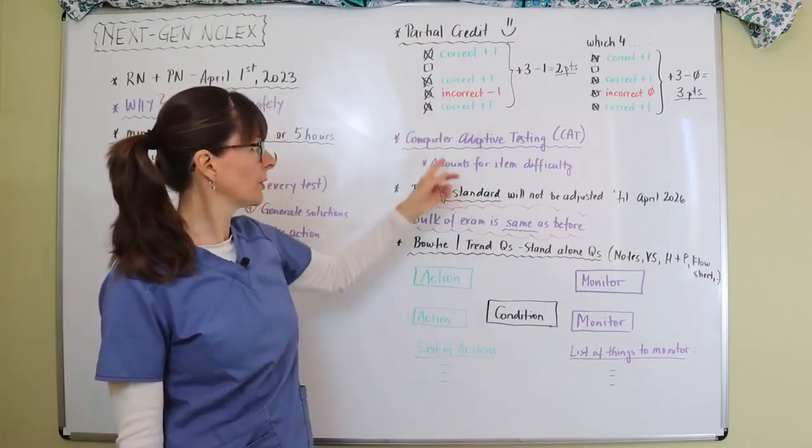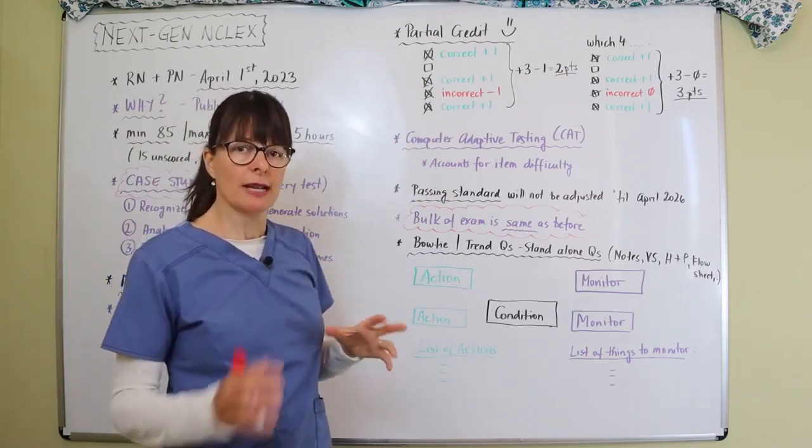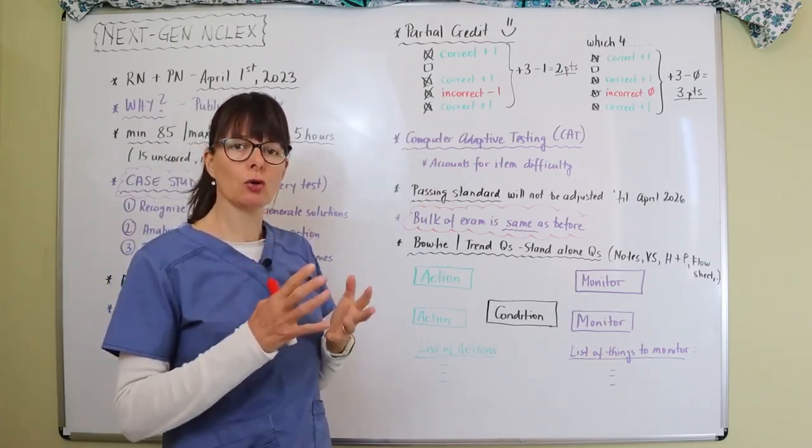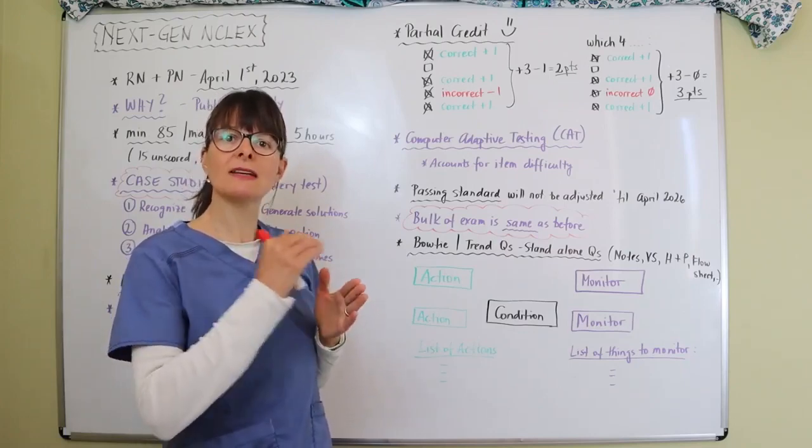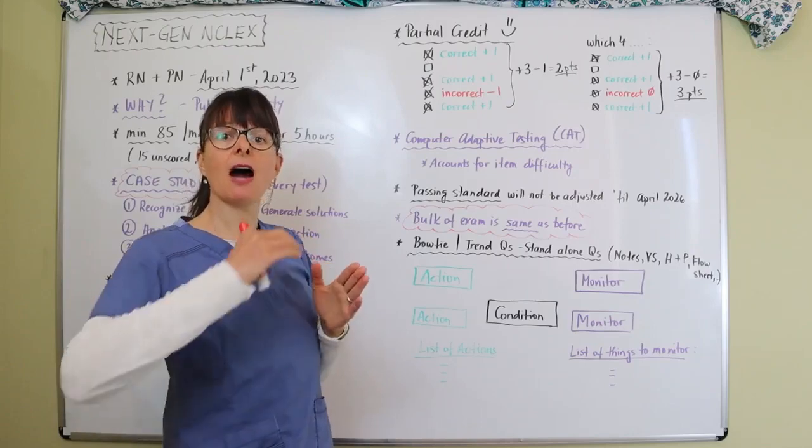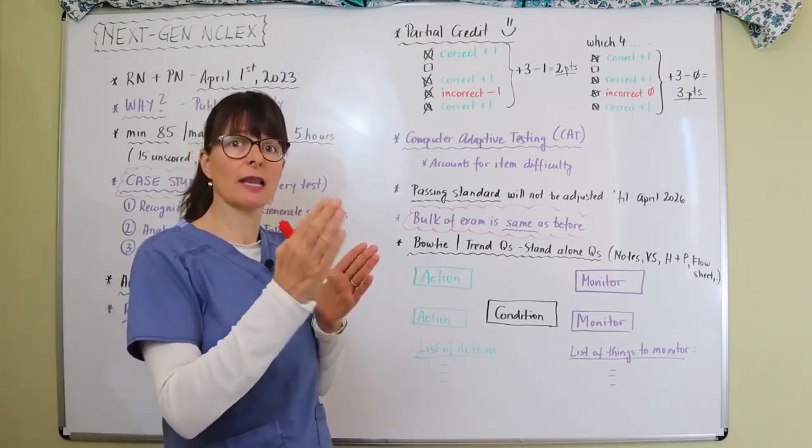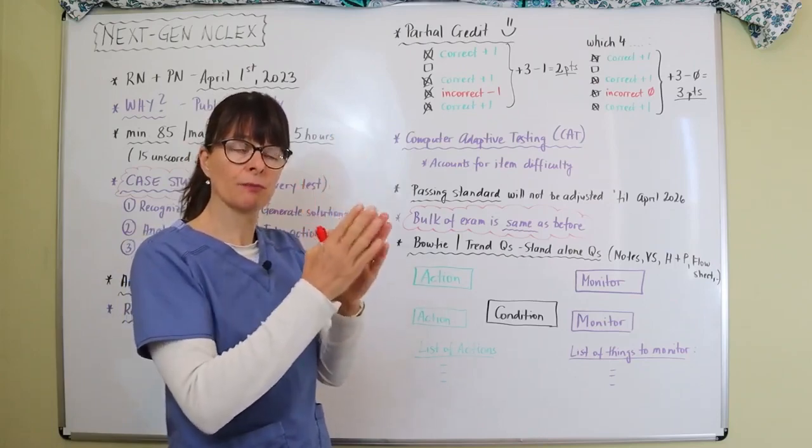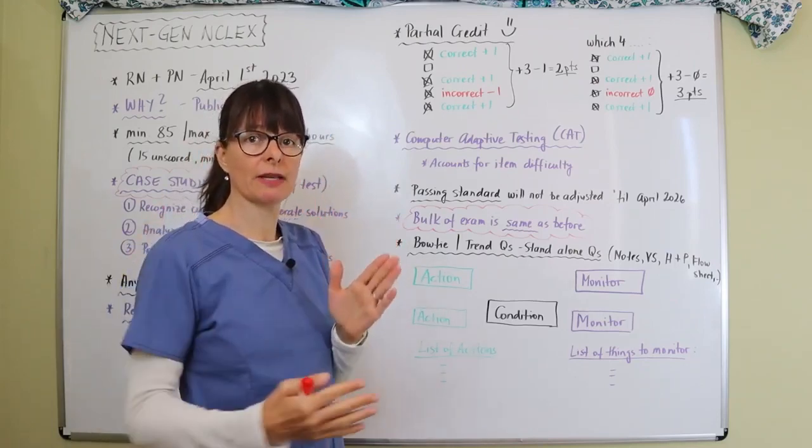Computer adaptive testing: you've probably heard about this from your professors. The computer knows the difficulty of the test item, and the more difficult the test item, the higher the score will be, and also meaning that the level of correct answer has to be a little bit lower the more difficult the item is.